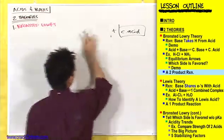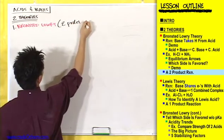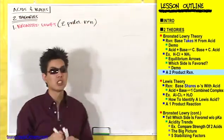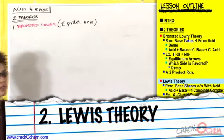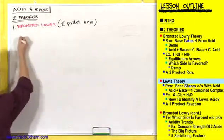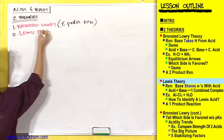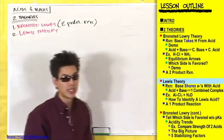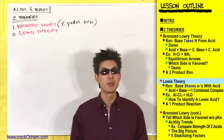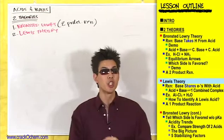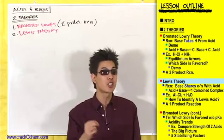Go ahead and write next to Brønsted-Lowry that this is a two-product reaction. We'll compare this to Lewis theory in just a second. The second acid-base theory we have is called Lewis theory.